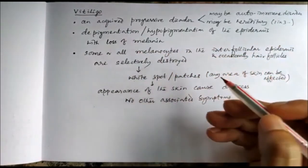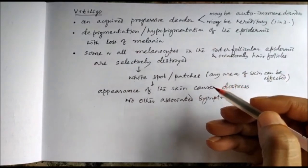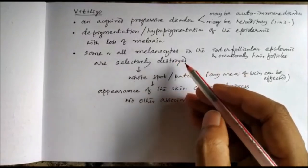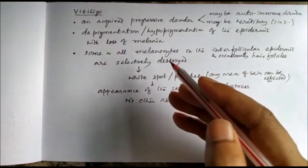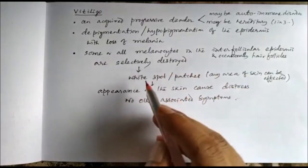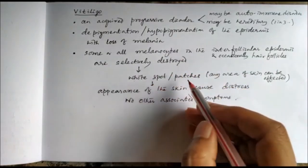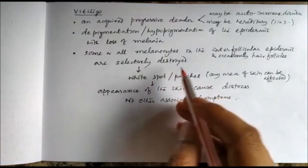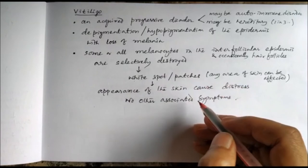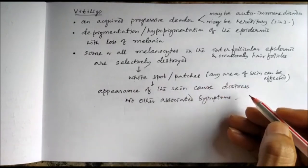This occurs because of loss of melanin. Some or all melanocytes in the interfollicular epidermis and occasionally in hair follicles are selectively destroyed, which results in white spots or patches. It can affect any skin area.